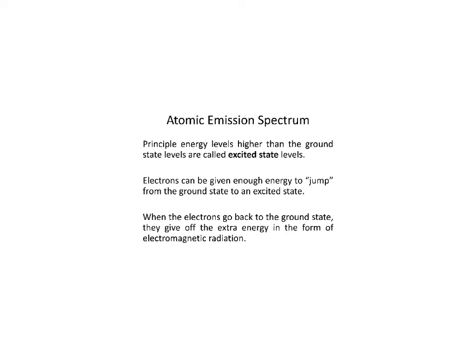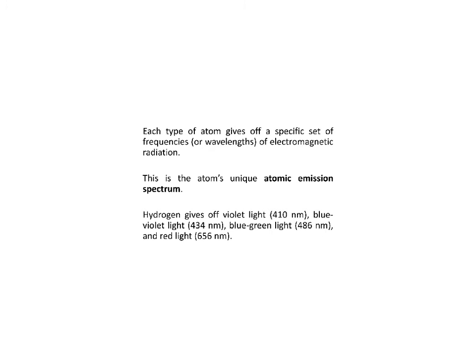Now let's look at the atomic emission spectrum. In class today we were looking at the atomic emission spectrum — we just saw the colors. If we had looked through a specific tube, we would have seen the actual atomic emission spectrum, which shows all the different wavelengths of light being emitted. Principal energy levels higher than the ground state are called excited state levels. Electrons can be given enough energy to jump from the ground state to an excited state, and when they go back, they give off extra energy in the form of electromagnetic radiation — usually visible light, sometimes UV or IR. Each type of atom gives off a specific set of frequencies or wavelengths, which is the atom's unique atomic emission spectrum.